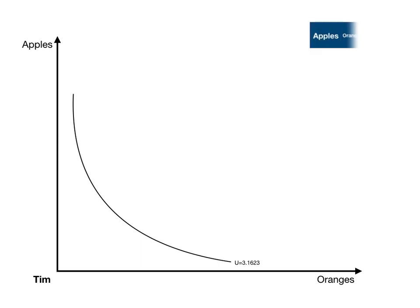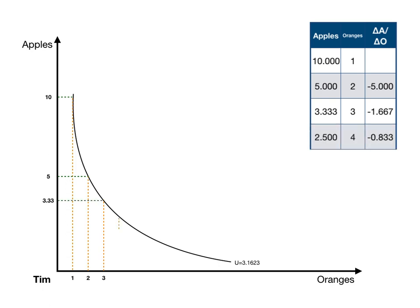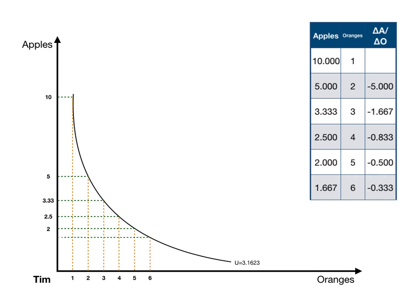Tim can consume anything along that indifference curve and he's just as happy as at any other point along it. For example, Tim may have one orange and ten apples, or he may decide to have two oranges and five apples — he's no different, neither more nor less happy. He may consume a third orange and have just 3.33 apples, or go with a fourth orange and have two and a quarter apples. Anywhere along these points, Tim is indifferent between any other point along this indifference curve.